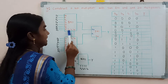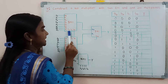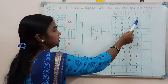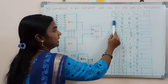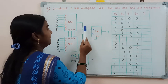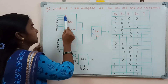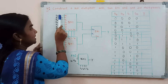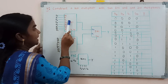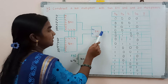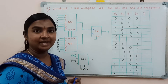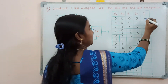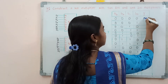The selection line bits S2, S1, S0 are 0, 0, 0. Based on this binary data, it is going to select data line D0. This D0 data is then transferred to the output Y, so the output Y is D0.